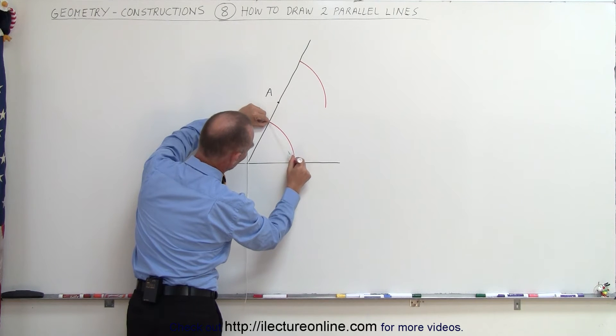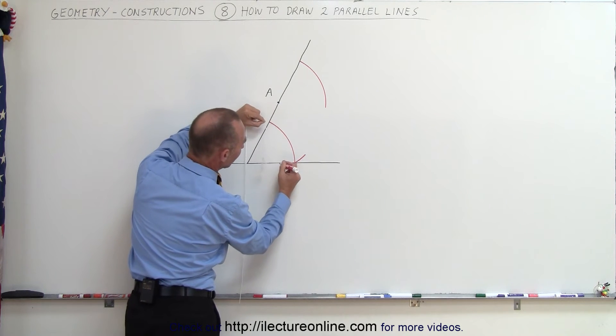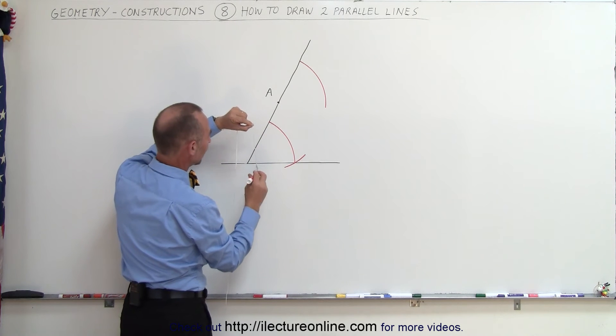And we make the length of the string so that we can draw another small little arc right here where it crosses the line, right there where the arc touches the line. And we do it again over here.